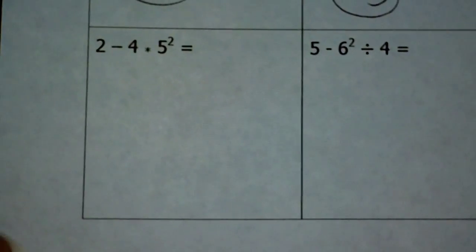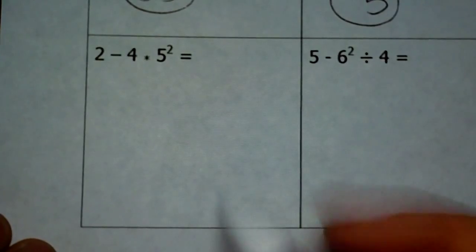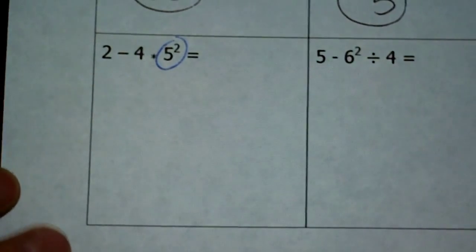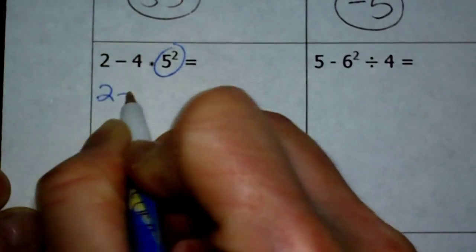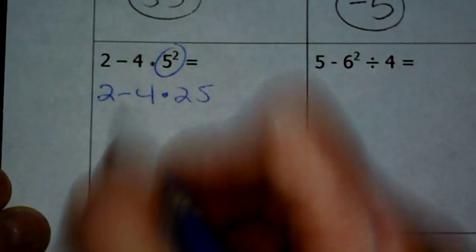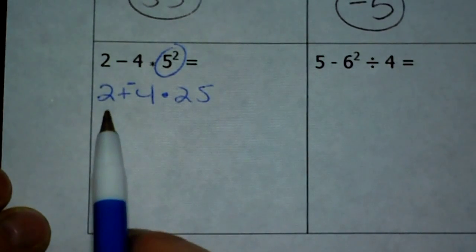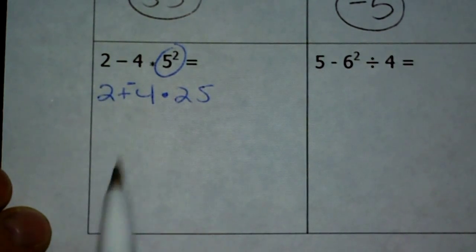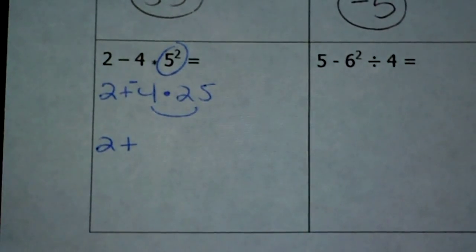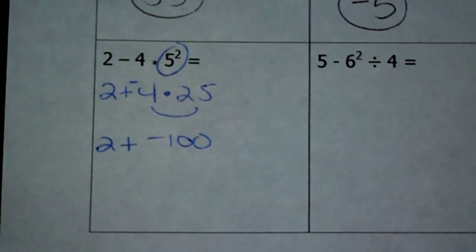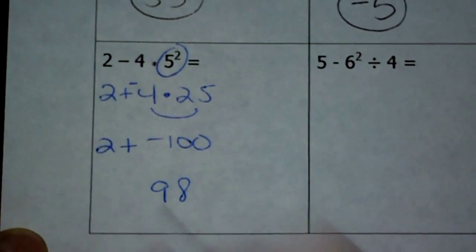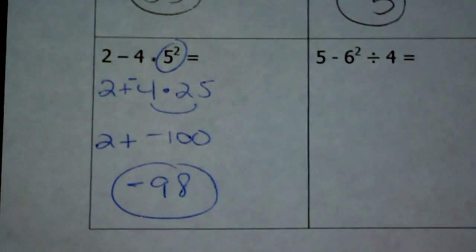I have 2 minus 4 times 5 squared. Before I do any keep-change-changing, let's take care of the exponents. 5 squared means 5 times 5 — not 10 — which is 25. Now that all my exponents are gone, I'm going to keep-change-change. You're tempted to take 2 plus negative 4, but you can't — you need to solve multiplication before you can add. So I take 2 plus whatever negative 4 times 25 is, which is negative 100. Then 2 plus negative 100: subtract the digits and take the sign of the greater, giving a final answer of negative 98.